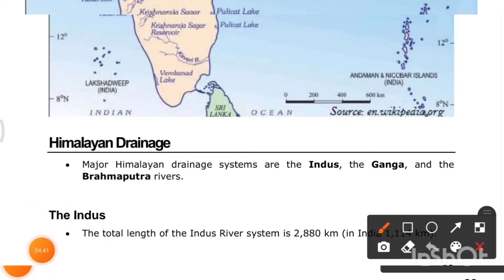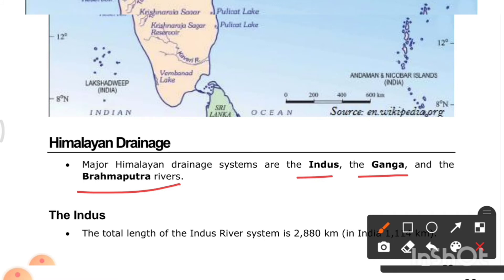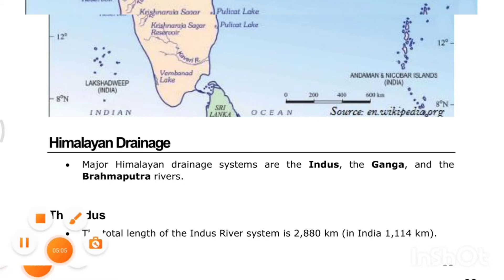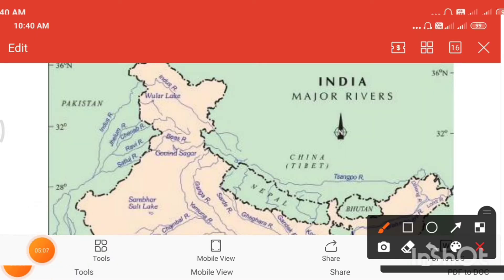The major Himalayan drainage systems are the Indus, the Ganga, and the Brahmaputra rivers. The total length of the Indus River system is around 2,880 kilometers, and within India it is 1,114 kilometers.